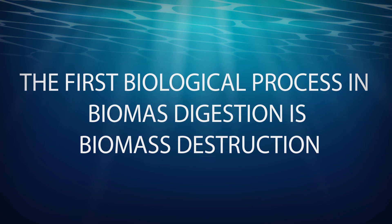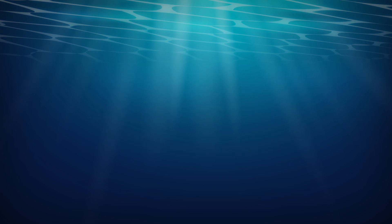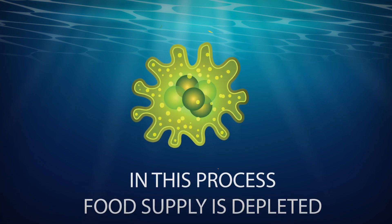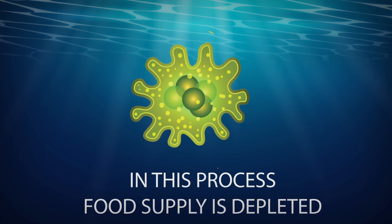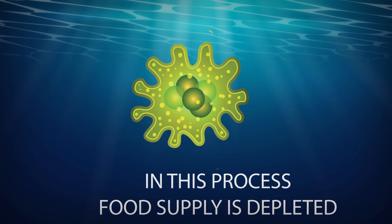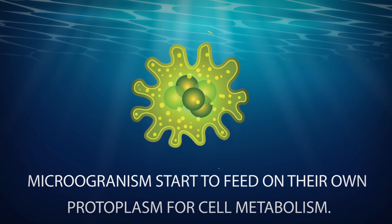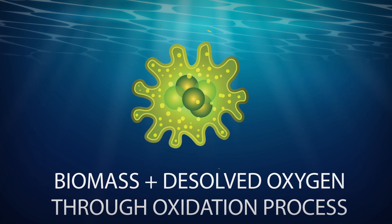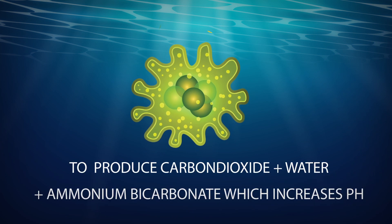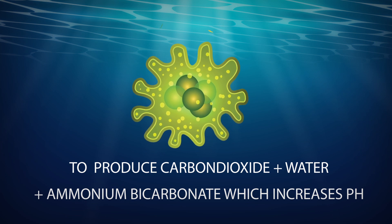The first biological process in biomass digestion is biomass destruction. In this process, the food supply is depleted and microorganisms start to feed on their own protoplasm for cell metabolism. Biomass reacts with dissolved oxygen through an oxidation process to produce carbon dioxide, water, and ammonium bicarbonate, which increases pH.